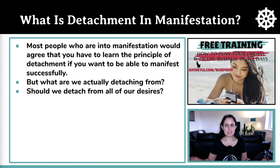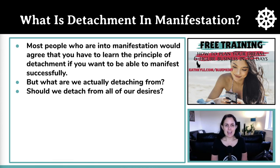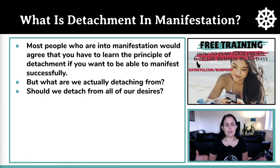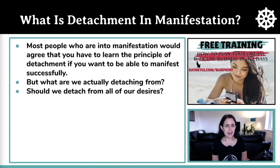What is detachment in manifestation? There is a lot of confusion around detachment in manifestation and I see it used in totally different ways. You hear people saying you can manifest anything you want if you just believe it, but in the next breath you hear people saying you need to let go of attachment to your desires — detach from your desires otherwise you won't be able to manifest them. So how do we trust and let go at the same time, and what does this actually look like in practice?